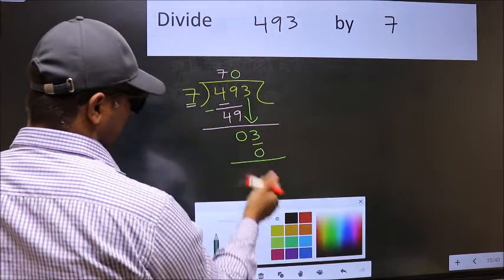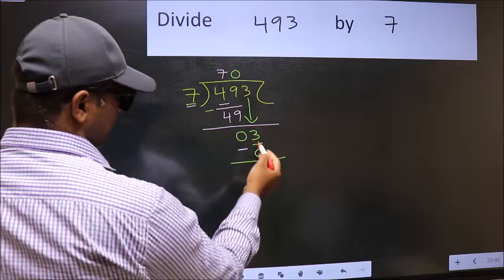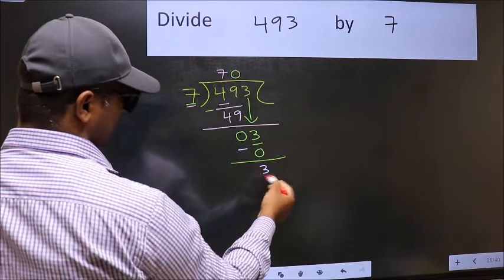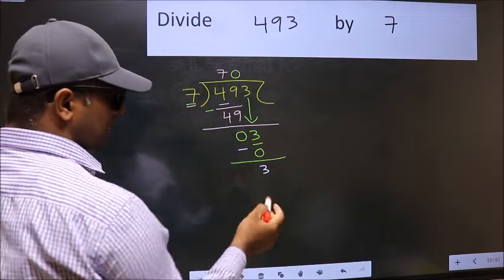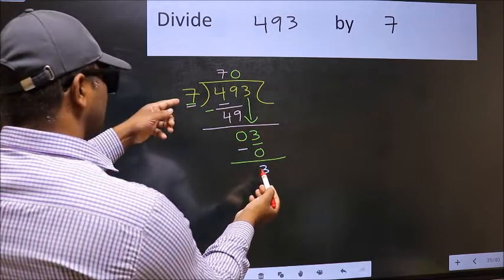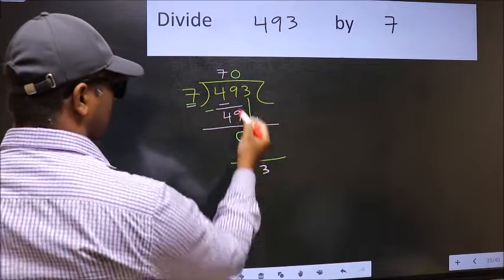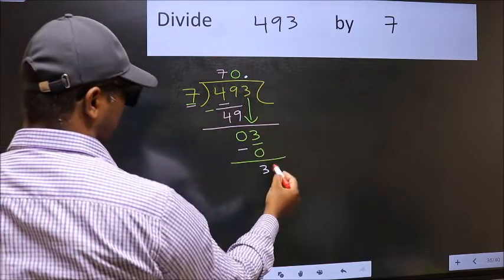Now you should subtract. 3 minus 0 is 3. Over here, we did not bring any number down, and 3 is smaller than 7, so now you can put a dot and take 0.